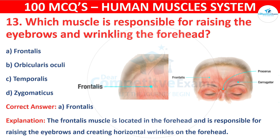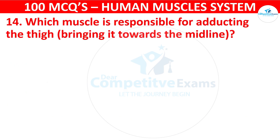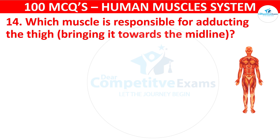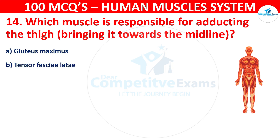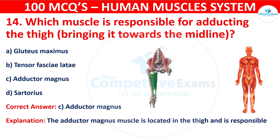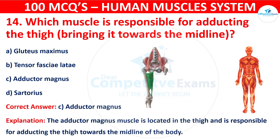Question number fourteen: Which muscle is responsible for adducting the thigh, bringing it towards the midline? Your options are: Gluteus maximus, Tensor fasciae latae, Adductor magnus, or Sartorius. The correct answer is C, that is adductor magnus. The adductor magnus muscle is located in the thigh and is responsible for adducting the thigh towards the midline of the body.